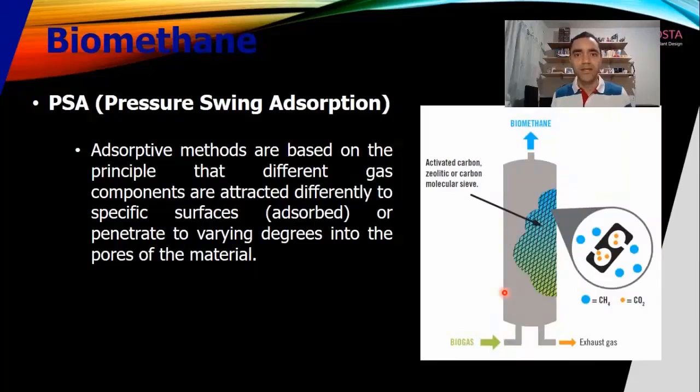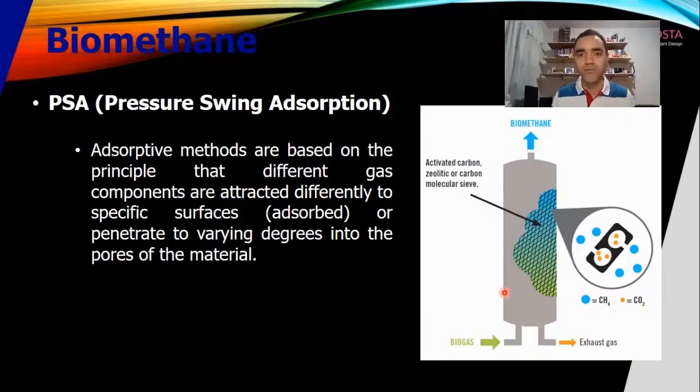Another technology available for the purification of biogas to biomethane is pressure swing adsorption. It is a method that uses the adsorption of contaminants at the surface of a physical material.